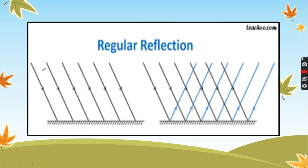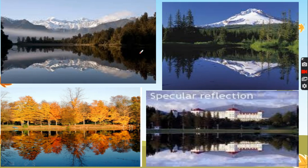Here is another picture. These are light rays striking a smooth surface, and they will be reflected in one direction — that is regular reflection.